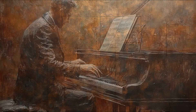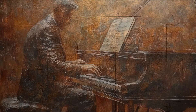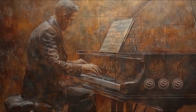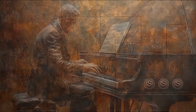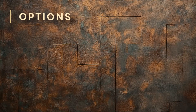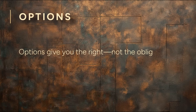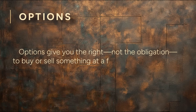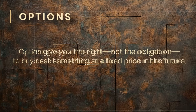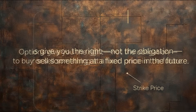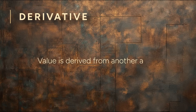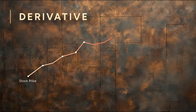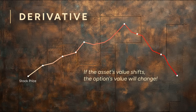Imagine you're considering a concert ticket but aren't sure you can go. What if you could pay a small amount now to reserve it and only buy the ticket if you decide to actually go? That's what options are in finance — they give you the right, not the obligation, to buy or sell something at a fixed price in the future. That price is called the strike price. And 'derivative'? It just means the option's value comes from another asset, like a stock or commodity. If that asset's price shifts, the option's value does too.